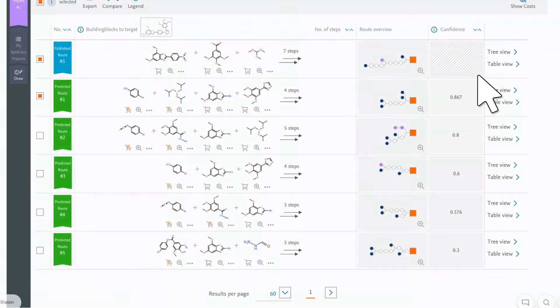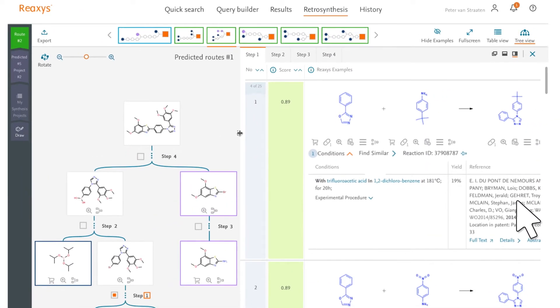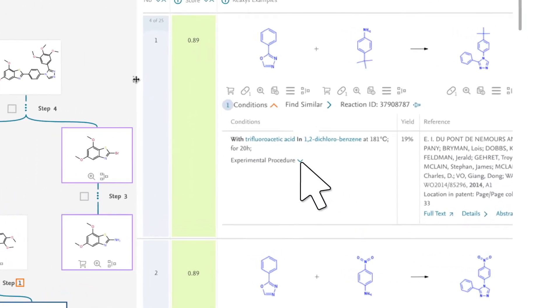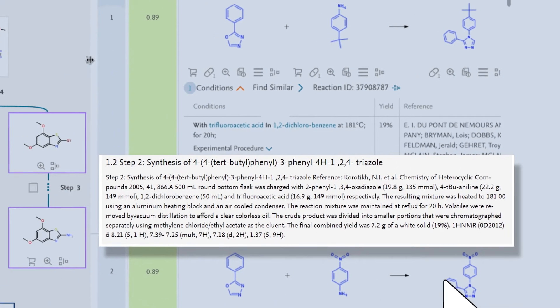The Route Confidence Scoring System also ranks routes. All synthesis routes and their details are visible in one window for easy decision-making. Link to literature references for published routes, and to the literature that informed predicted routes.